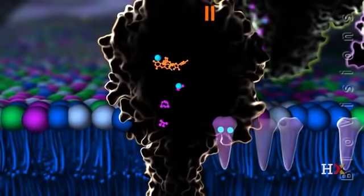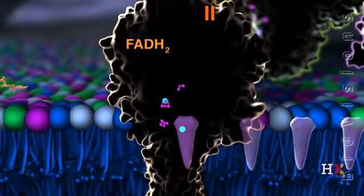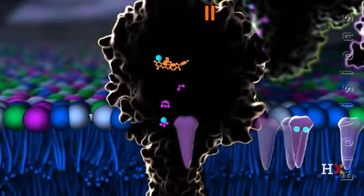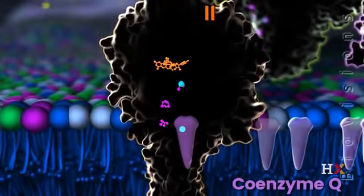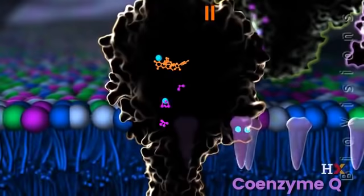Complex 2 is similar to complex 1 in two important ways. First, high energy electrons also enter complex 2 via a byproduct of sugar metabolism, although here the molecule is FADH2. Second, complex 2 also transfers electrons between several redox centers before donating them to coenzyme Q. One major difference, however, is that complex 2 does not use the energy liberated to pump protons.